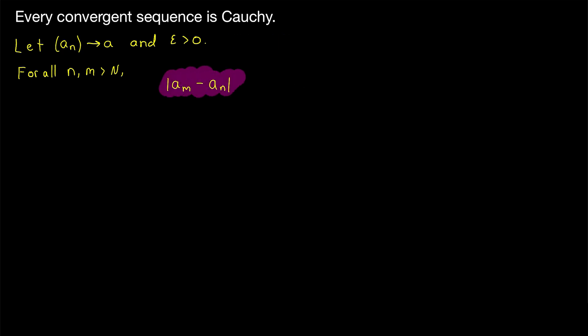Since we're trying to show that this expression is less than epsilon, we would like to have a little bit more control over its value. One thing we have a lot of control over is the distance between terms of the sequence and the limit A. We can make those as close as we want, so we might like to introduce the limit A into this expression somehow.